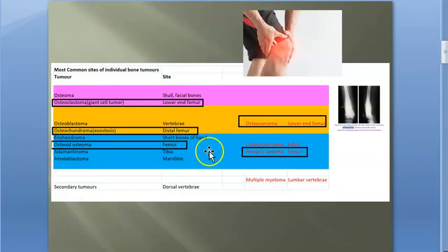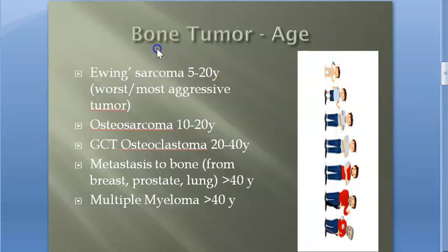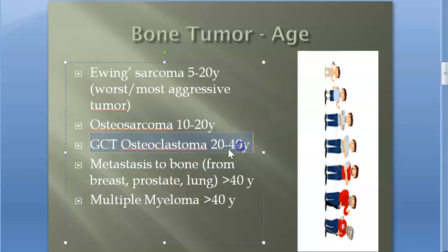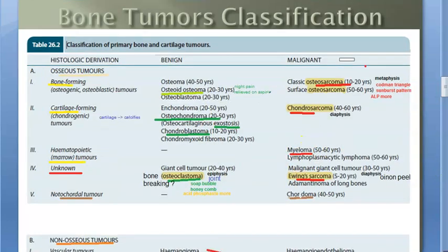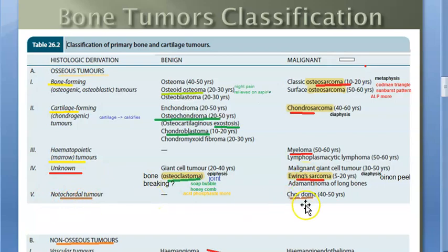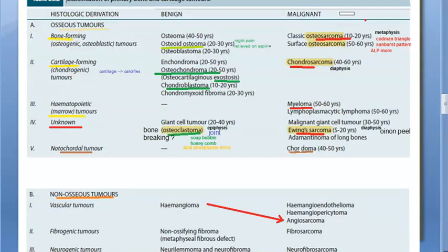Final summary: common locations are mostly the femur for exam-important tumors. By age: Ewing's sarcoma 5–20 years, osteosarcoma 10–20 years, giant cell tumor (osteoclastoma) 20–40 years, metastasis beyond 40 years from breast, prostate, and lung, multiple myeloma greater than 40 years. Osseous tumor classification includes bone forming (osteoid osteoma, osteosarcoma), cartilage forming (chondroblastoma, chondrosarcoma), marrow tumors (myeloma), and unknown (osteoclastoma, Ewing's sarcoma). Notochordal tumor is chordoma.